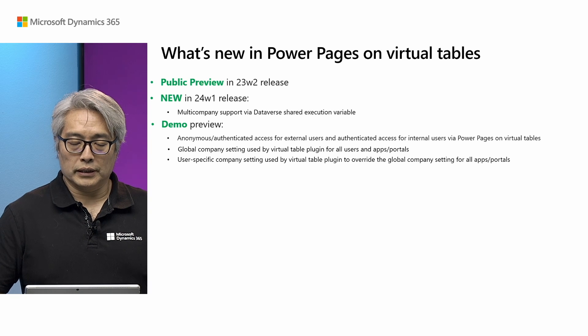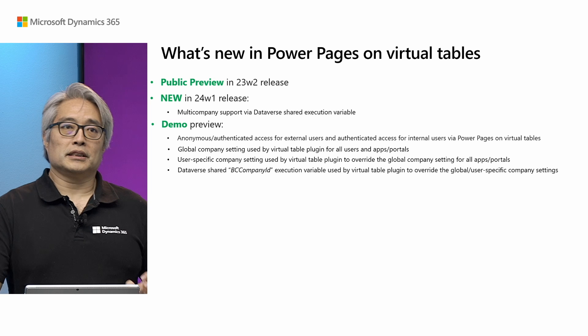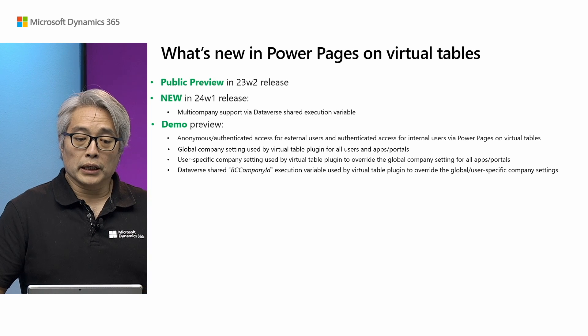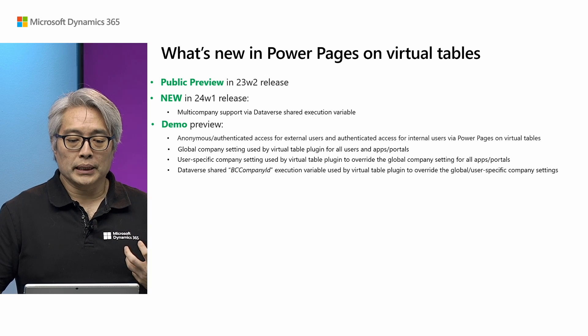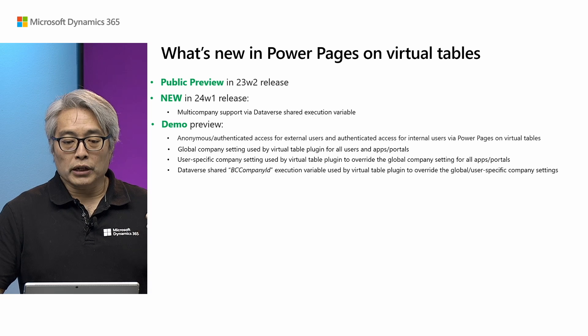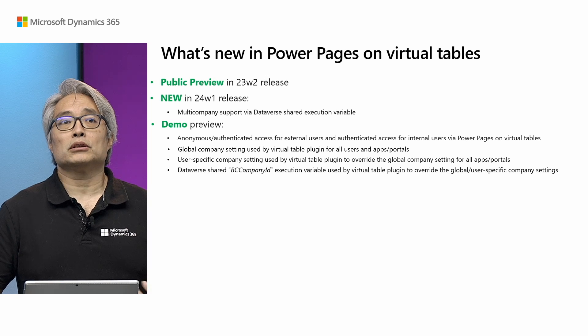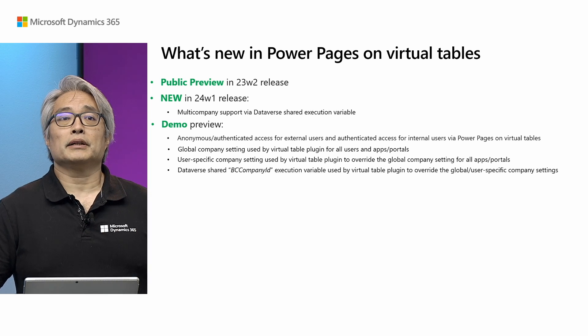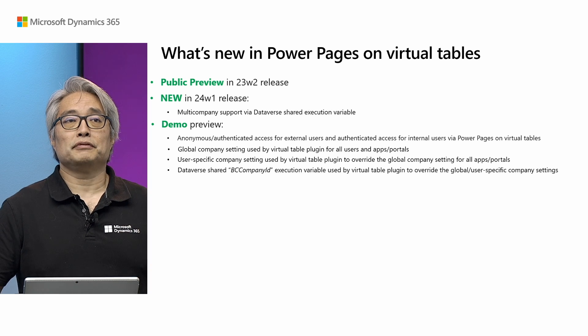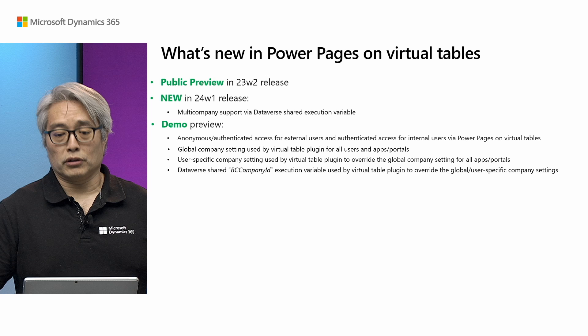For each user, you can target one company, and then all apps and Power Pages portals will use that company to show data from Business Central. The new feature essentially allows the Virtual Table plugin to use a Dataverse shared execution variable called BC Company ID. With this shared execution variable, the Virtual Table plugin can override both the global and user-specific company settings, allowing multiple Power Pages portals to address different companies in Business Central — multi-company support.